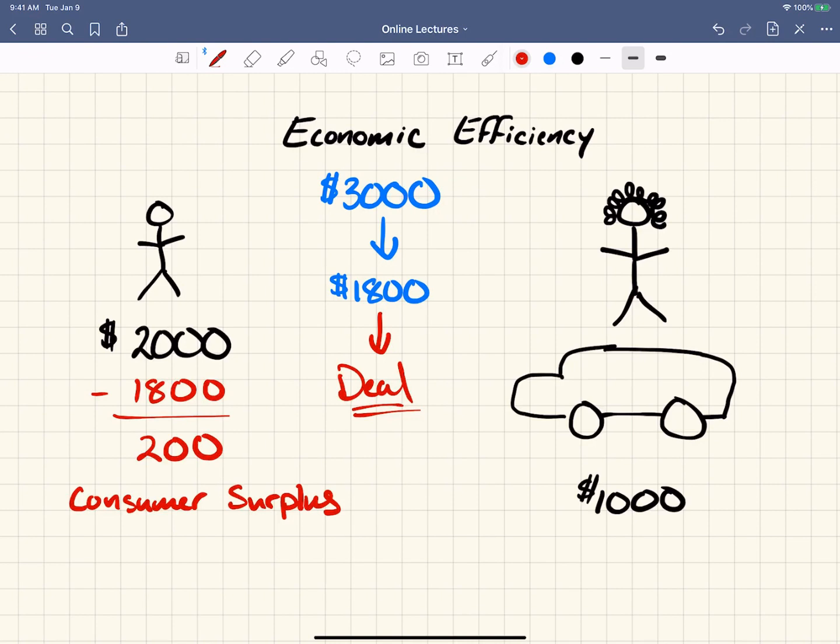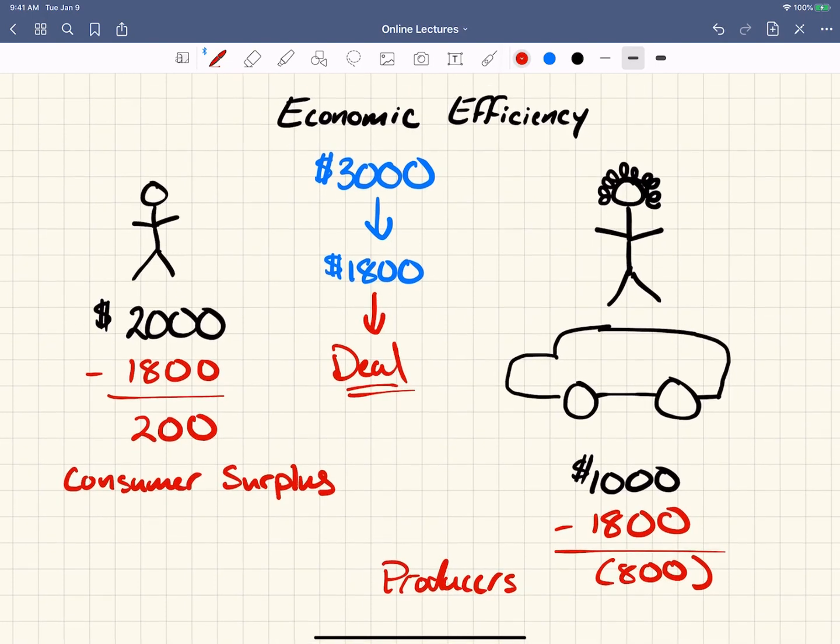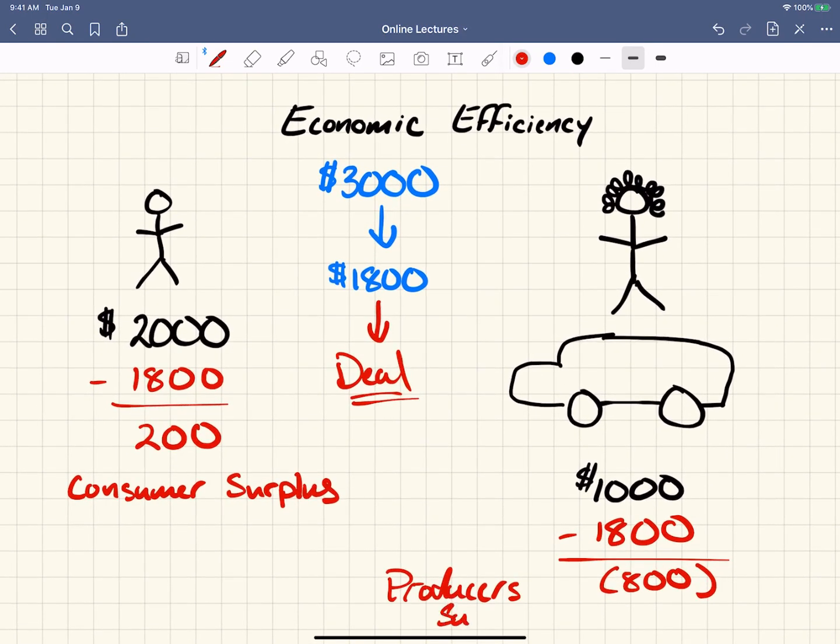Additionally, the granny, she would have taken $1,000. She would have gone as low as $1,000. You didn't know that. But she got $1,800 for it. This is even a good deal for her. We take the $1,000 and we subtract the $1,800, and this negative $800 or absolute value of $800, is what we call producer or seller surplus. Producer surplus.